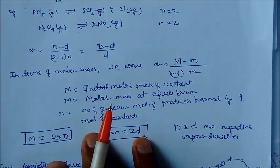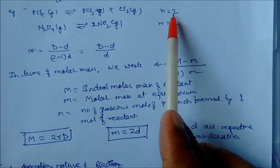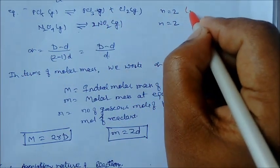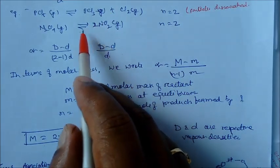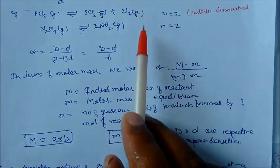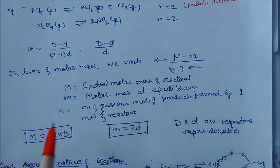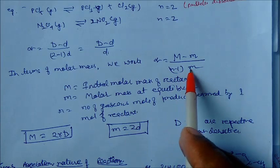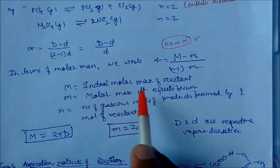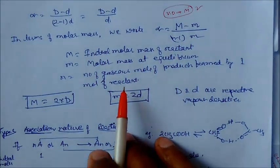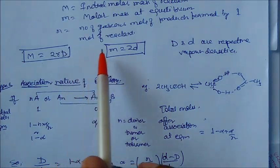Let us take an example. PCl₅(g) dissociates into PCl₃ + Cl₂. Here n = 2, since one mole of reactant gives 2 moles of product. So N minus 1 = 1, and alpha = (D minus d)/d. In terms of molar mass: alpha = (M minus m) / ((n-1)·m), since vapor density is proportional to molar mass. Here M is the initial molar mass of reactant, m is molar mass at equilibrium, and M = 2D.